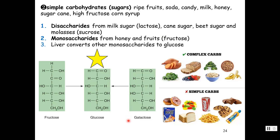All of those disaccharides are going to be broken down into their monomer units, and then the liver is going to take those single monomer units and convert all of them to glucose. Some simple sugars we ingest directly — fruit sugar is fructose, and honey also contains fructose — but the liver converts all other monosaccharides to glucose, which then enters glycolysis.